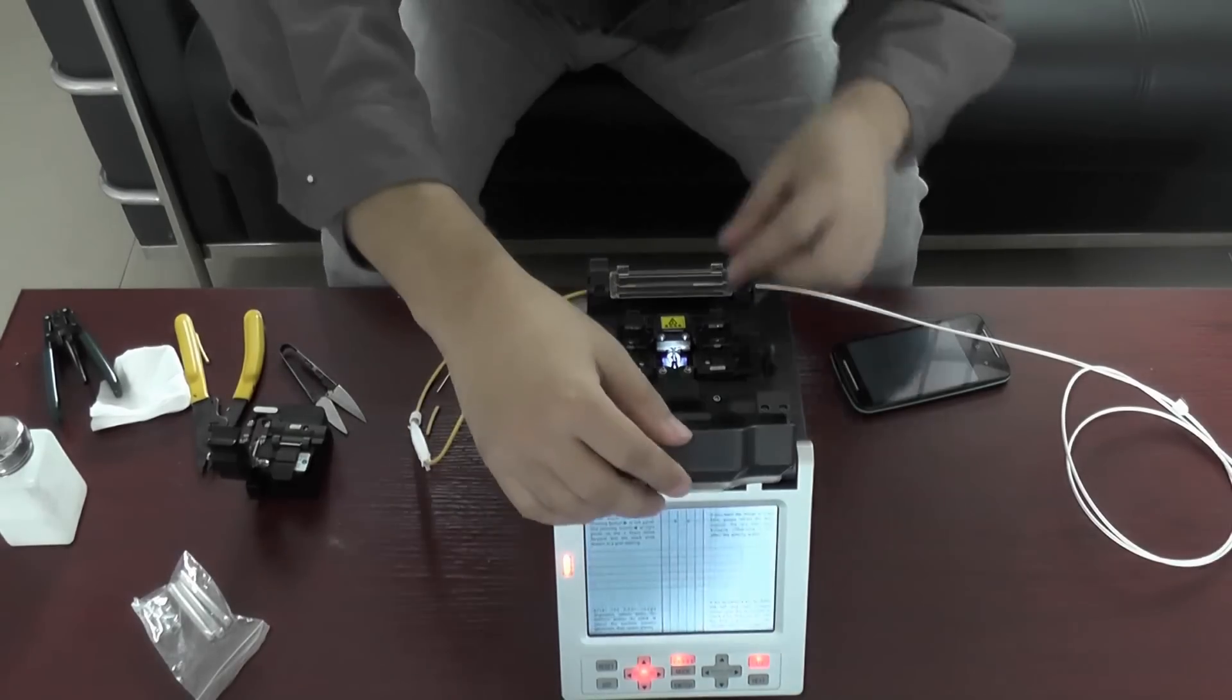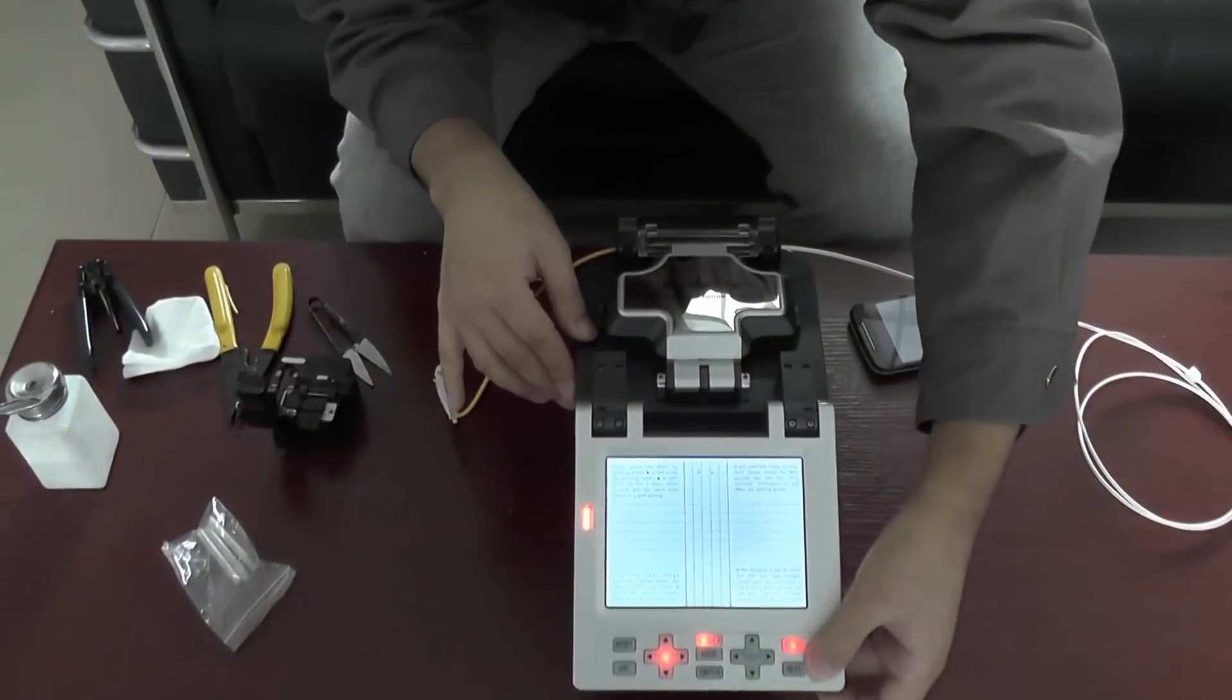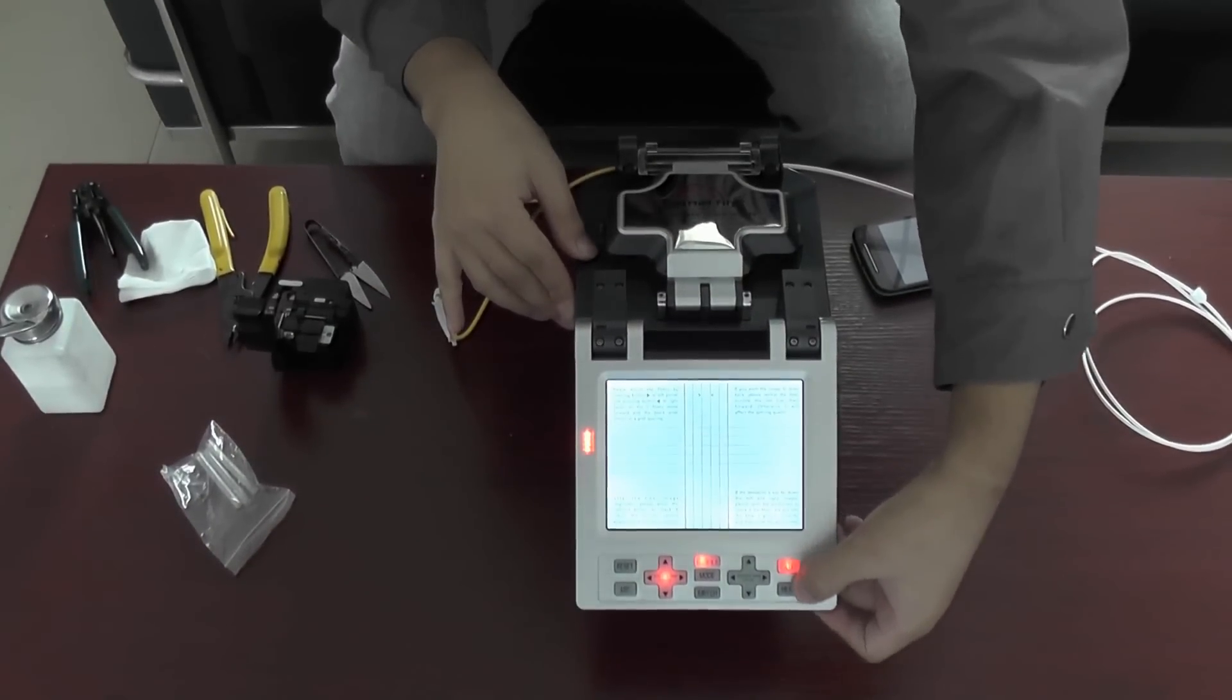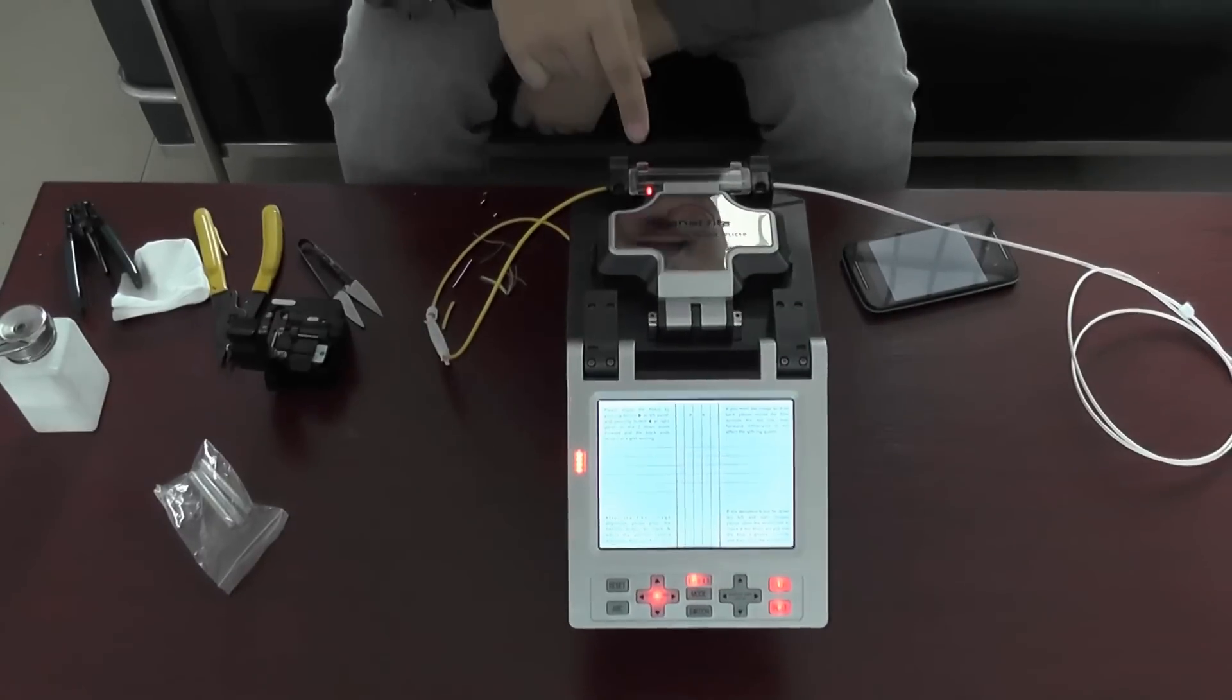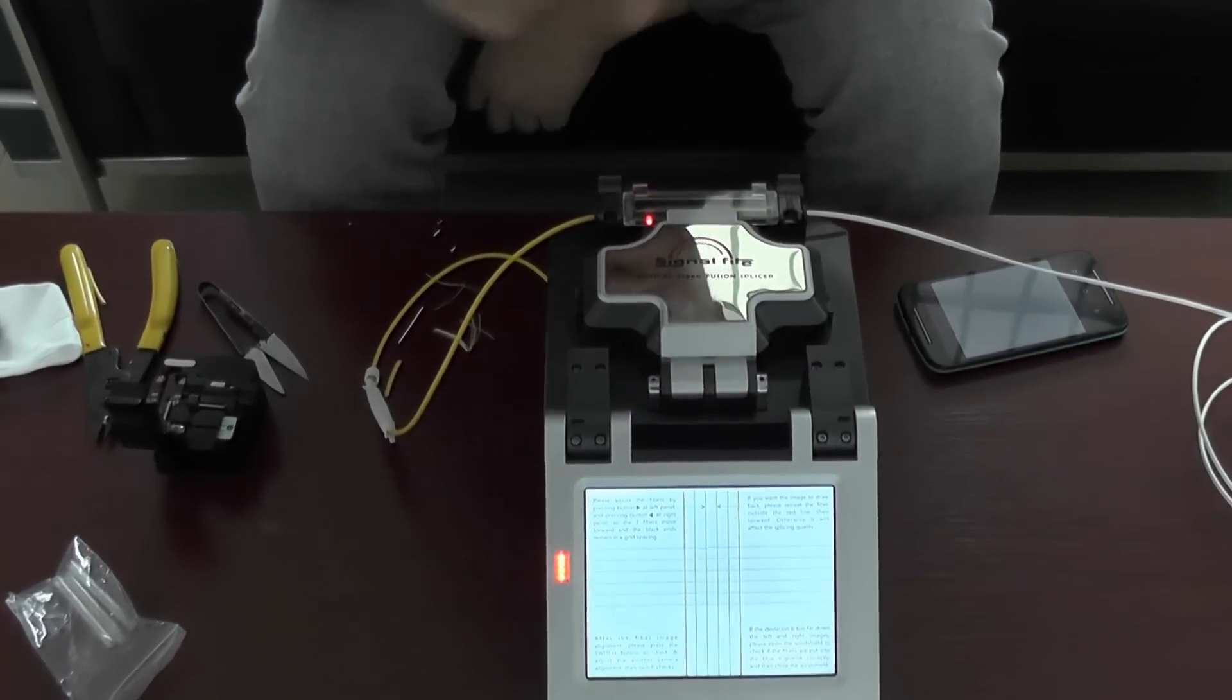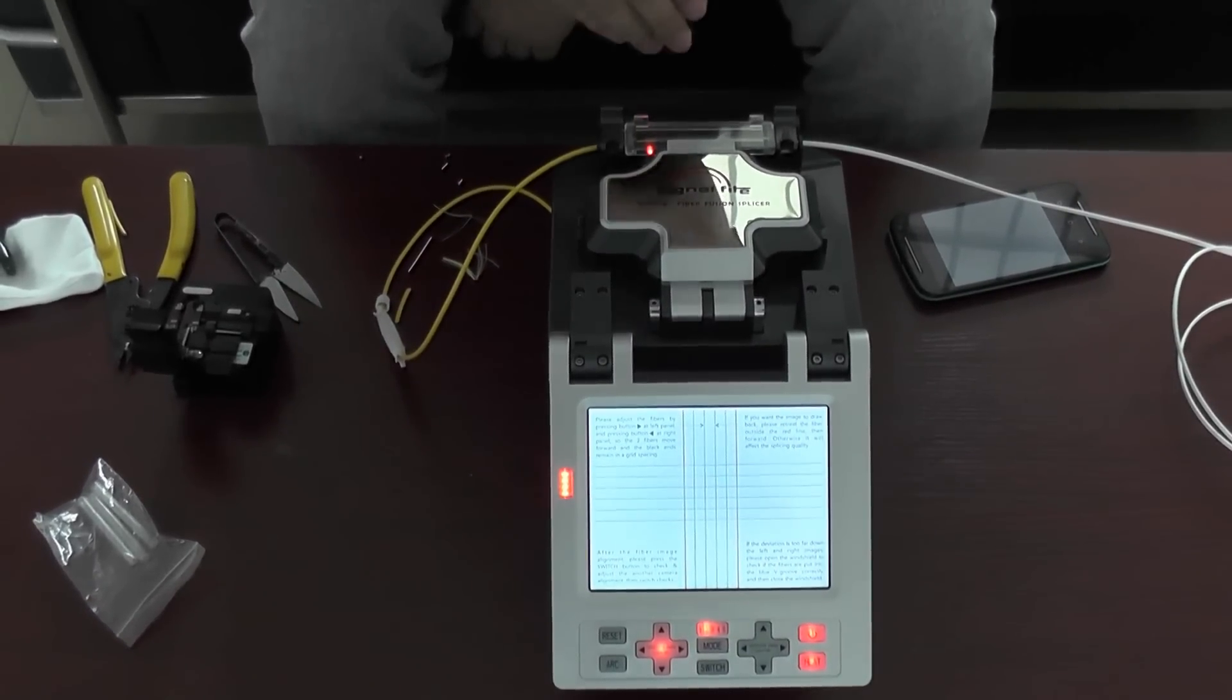Okay, now we should heat the shrink. You see the bottom, the heat button. Yeah, push it. Push it, and the red line will turn on. When the red line turns off, means the heat is ready. Okay, now I will show you the bare fiber splicing.